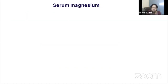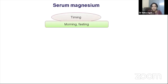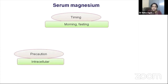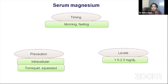Serum magnesium is an important marker in cases of hypocalcemia, hypokalemia, and alkalosis. It is a fasting serum sample, and as with phosphorus, a tourniquet or squeeze sample must not be used as it gives falsely high magnesium values. Normal values range from 1.5 to 2.5 mg/dL.